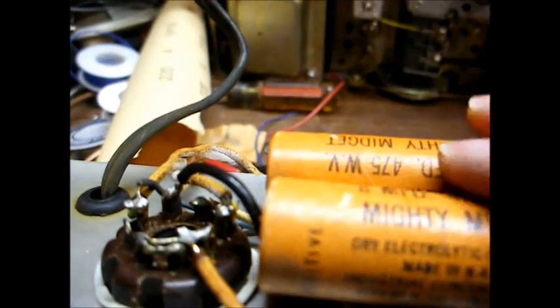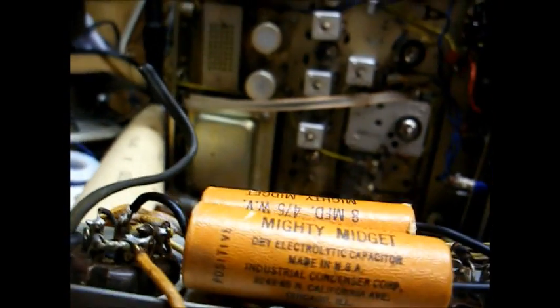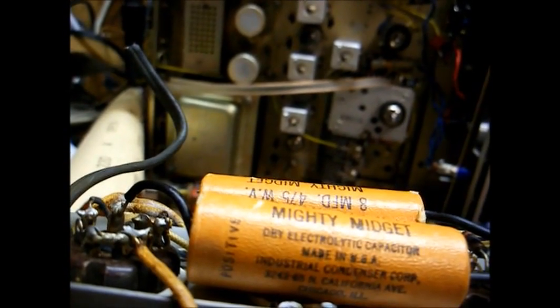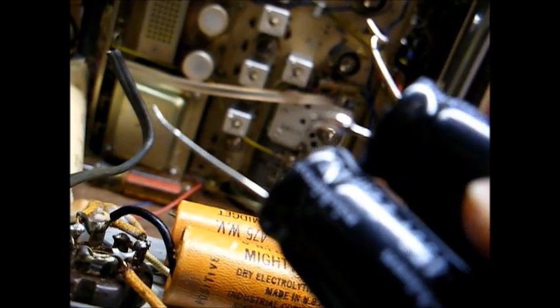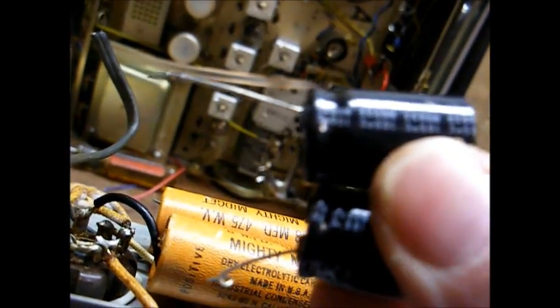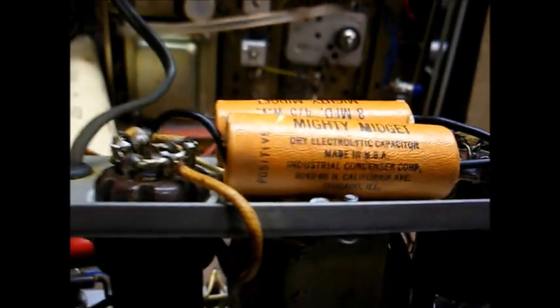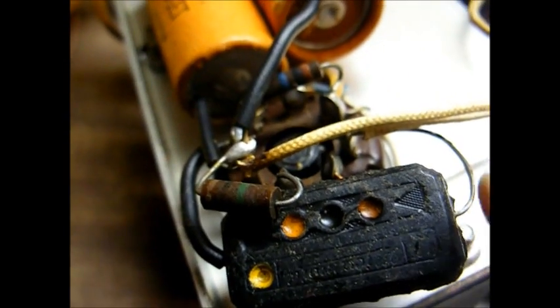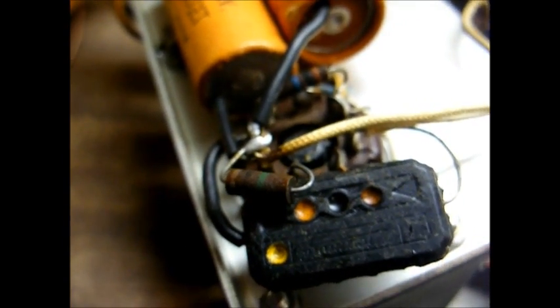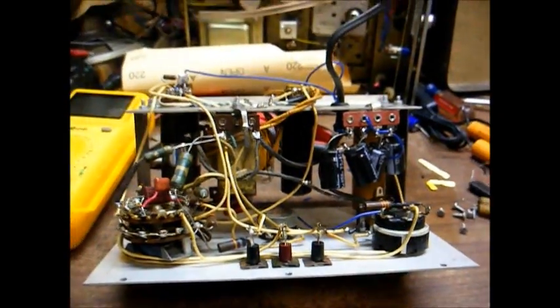Now we're going to replace these electrolytic filter capacitors. These are 8 microfarad, 475 working volt. Well there again, I don't have anything with that high of working voltage, so I just wired a couple of 22 microfarad caps in series, and that will give us 11 microfarad at 900 working volts. When you wire a capacitor in series, the working voltage doubles and the capacitance value gets cut in half. So 11 microfarads versus 8 microfarads, that won't pose a problem at all. And we have this capacitor here, which is a mica mold bomb or mica bomb. I believe it's a 0.01 microfarad. I can guarantee you this is leaky without even testing it, so we'll go ahead and replace that while we're working on this tonight.